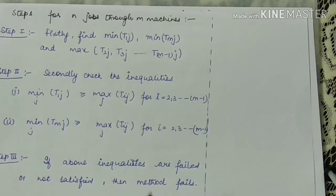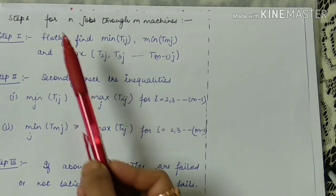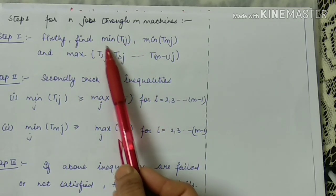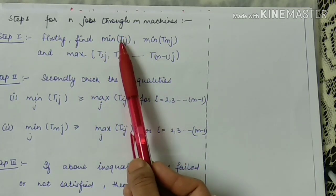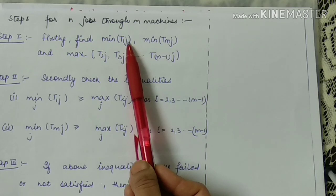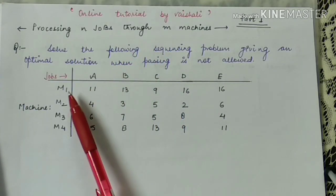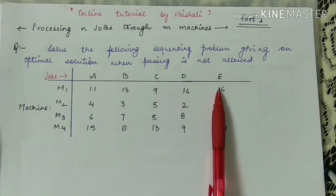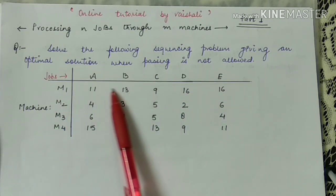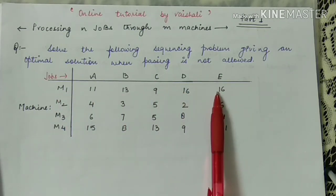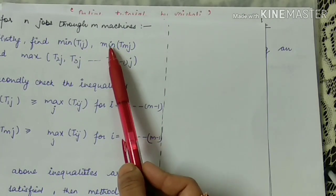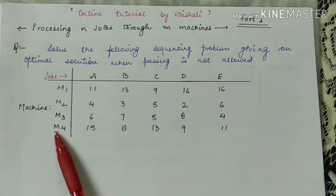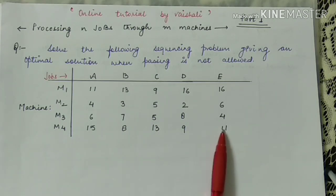Now I will explain the steps for N jobs through M machines. Step one: first, you have to find the minimum time on the first machine — that is the minimum of T1j (time taken on machine M1). Then you have to find the minimum time taken on the Mth machine — the last machine.